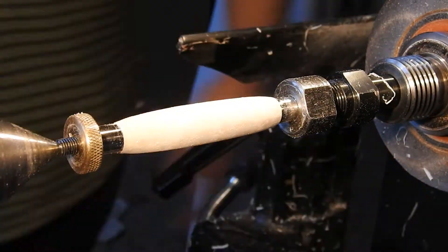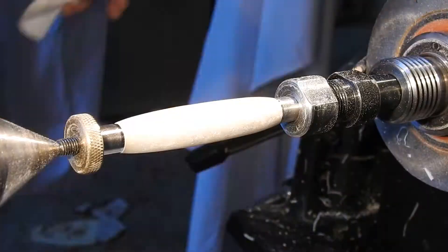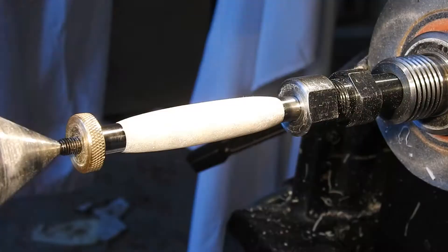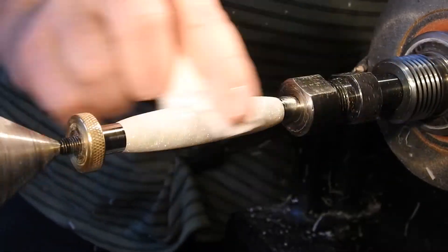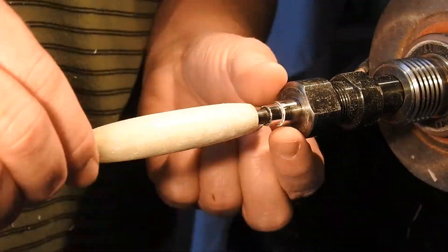I really hustled the video through the sanding process. Went from 80 to 400 with the Abranet pads, and then I think it's 1500 through 12,000 with the Micro Mesh, and then the Meguiar's plastic polish to finish it off.